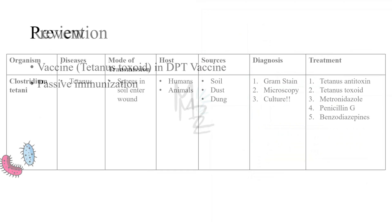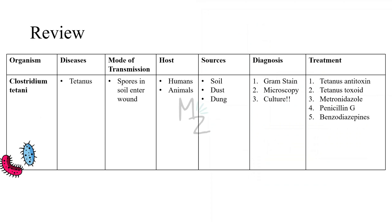To summarize: Clostridium tetani causes tetanus through spores in soil entering wounds. Hosts are humans and animals; sources include soil, dust, and animal dung. Diagnosis is based on gram staining, microscopy, and rarely culture. Treatment involves tetanus antitoxin (immune globulin), tetanus toxoid, antibiotics such as metronidazole and penicillin G, and benzodiazepines. If you have any suggestions, leave them in the comments, and connect on Instagram and Twitter.